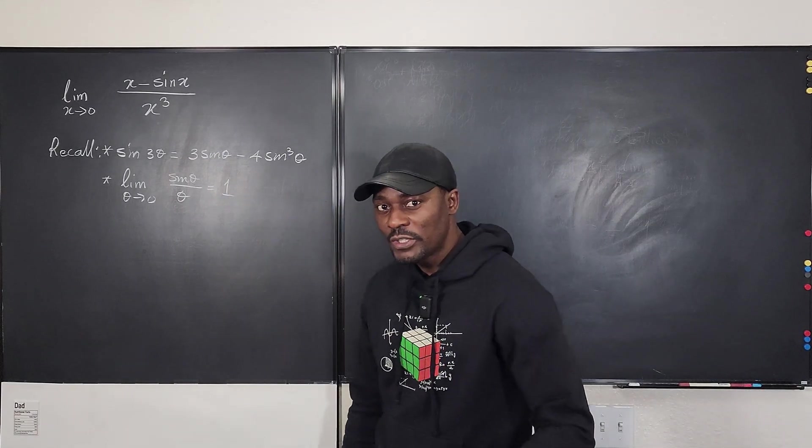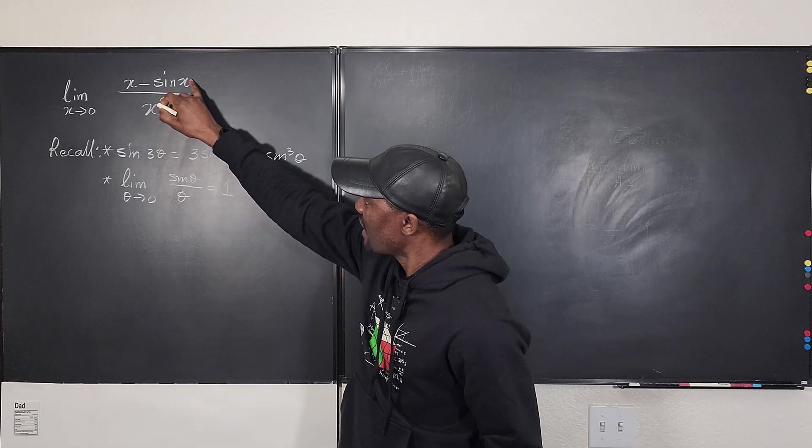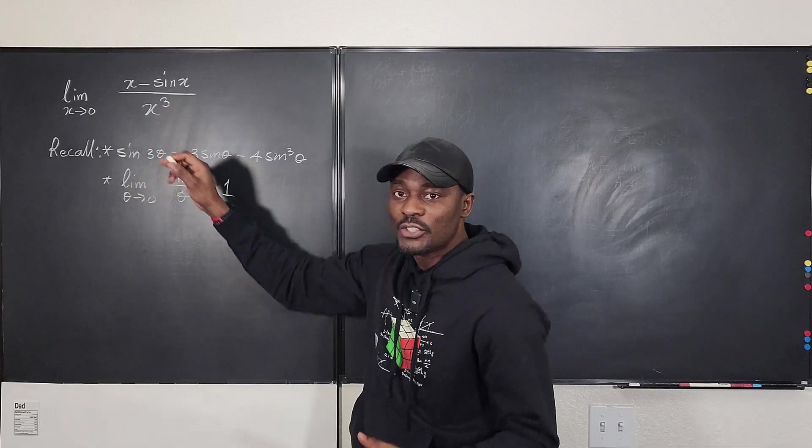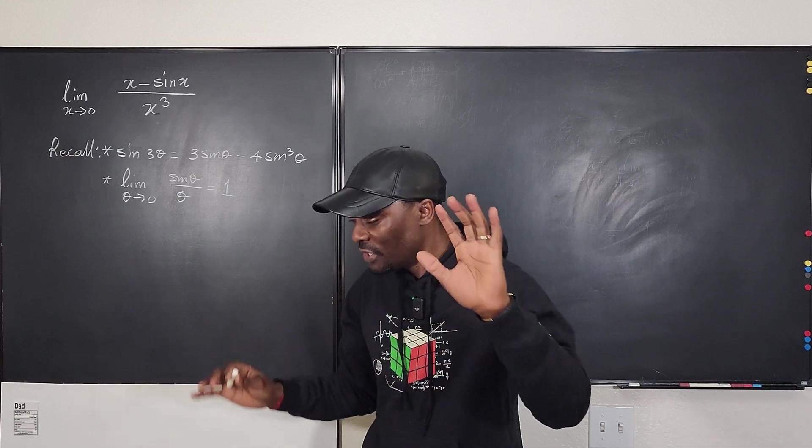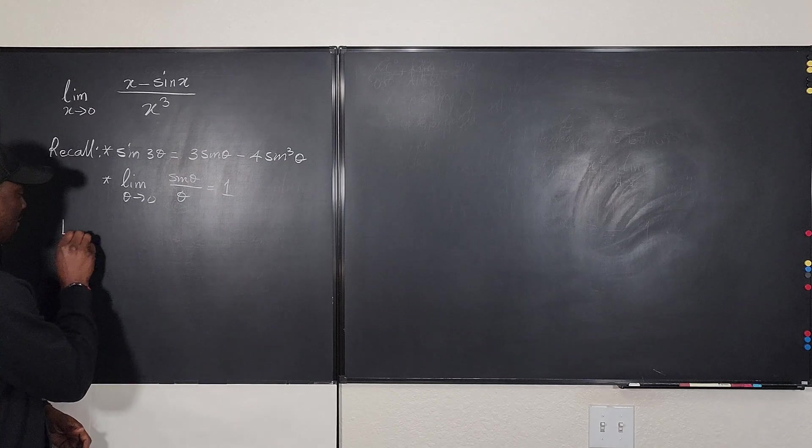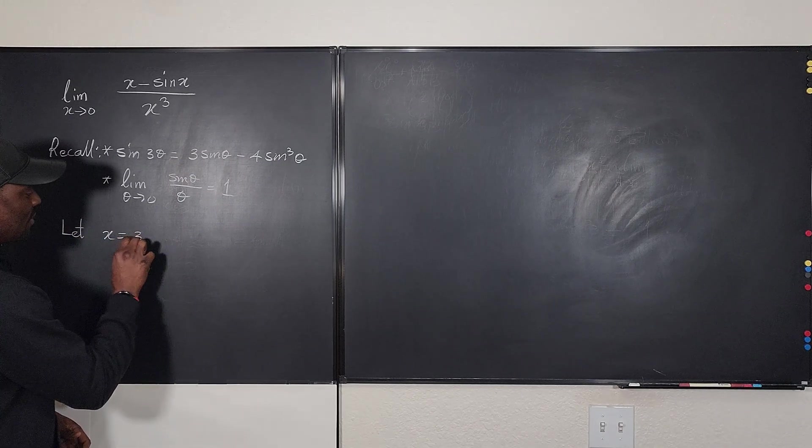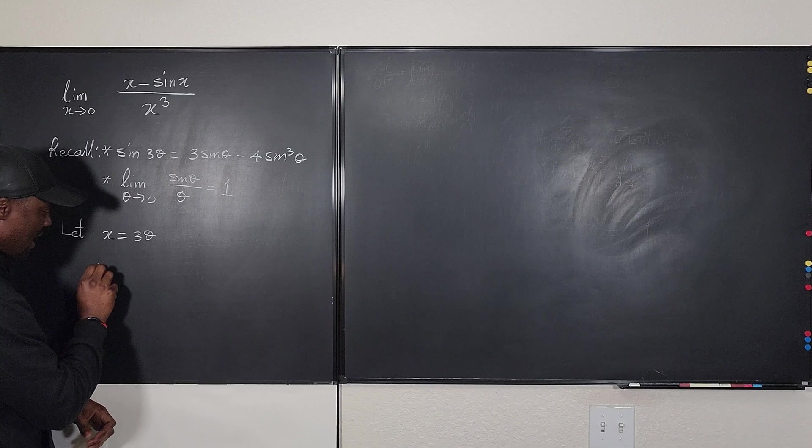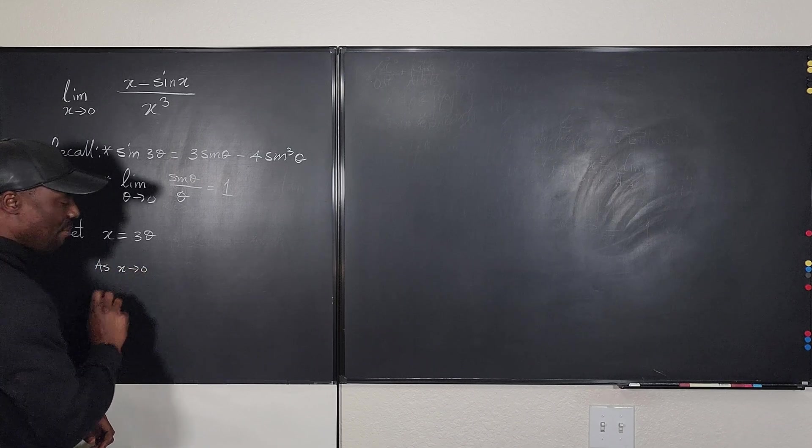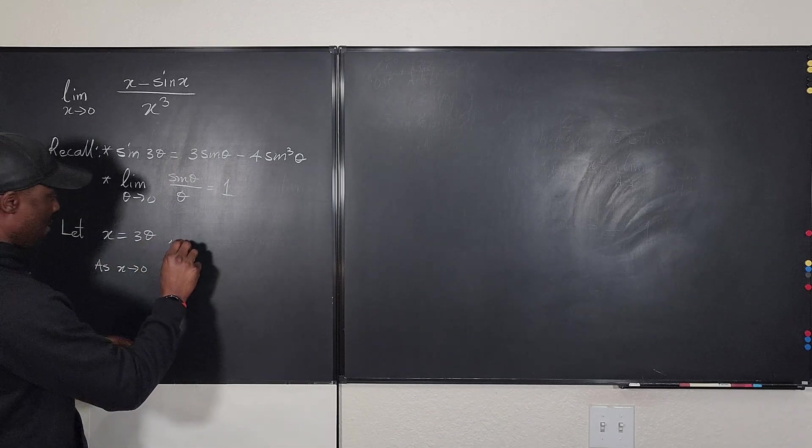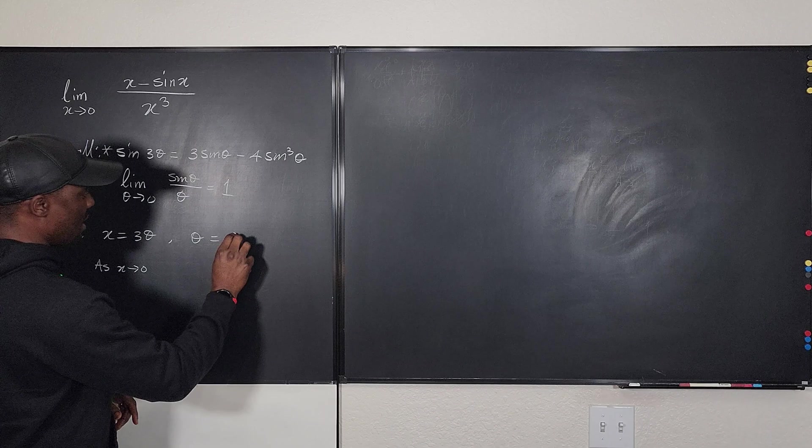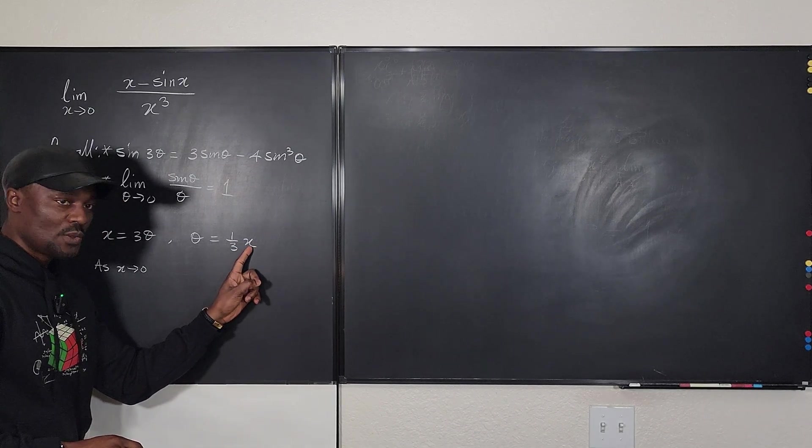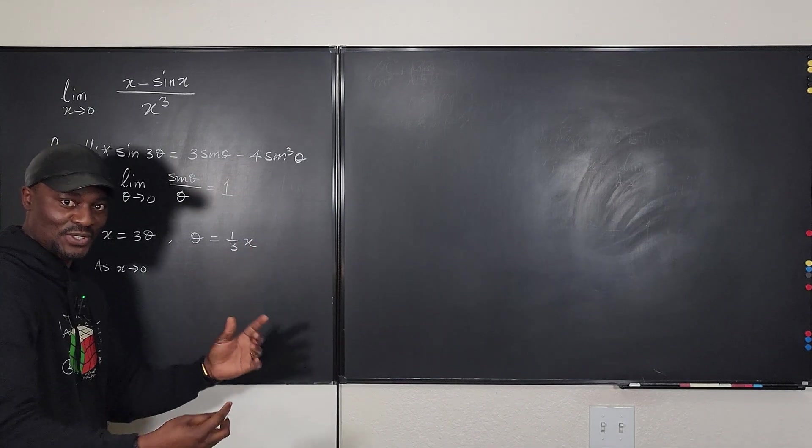So let's see. What do we need to do? You want to change this x to something like this. Because if you change this x to 3... So let's say x is equal to 3 theta. Let's see what that looks like. So we're going to say let x be equal to 3 theta. And then here this limit can actually become, you can say as x goes to 0, what happens to theta? Because here you notice that theta would be x over 3 or 1 third of x. So what happens? As x goes to 0, theta also goes to 0 because 1 third of 0 is going to end up becoming 0.